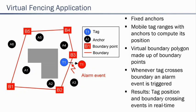The graph on the left side depicts a typical setup. Six fixed anchors A1 to A6 are freely distributed in the shown area. The mobile tag ranges with the anchors in order to compute its position. Additionally, a virtual boundary is set around an object, which could be a building or something else. The boundary has the form of a polygon and is defined by its boundary points. Whenever the tag crosses the boundary, an alarm event is triggered. Thus the system provides information on tag positions as well as boundary crossing events in real time.